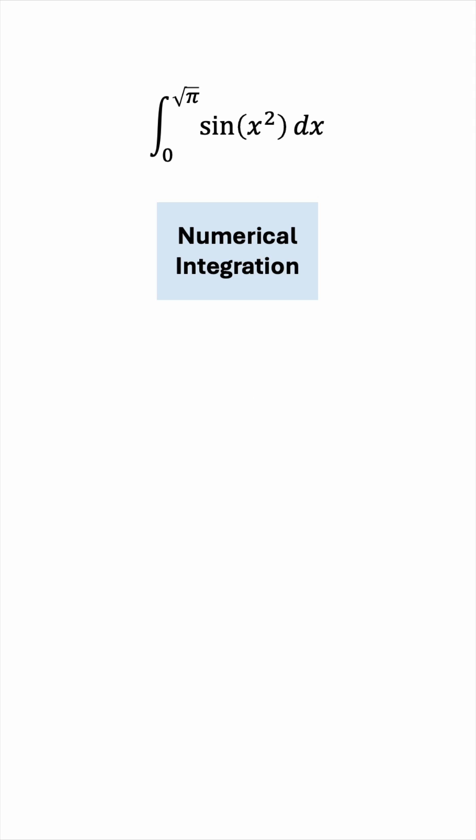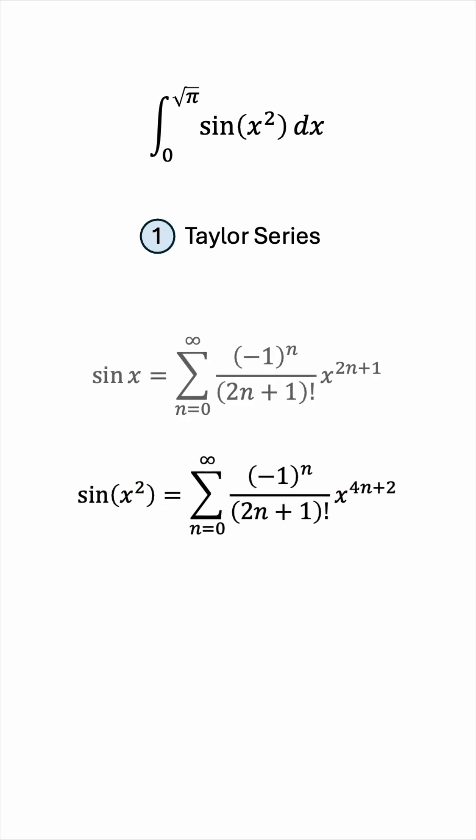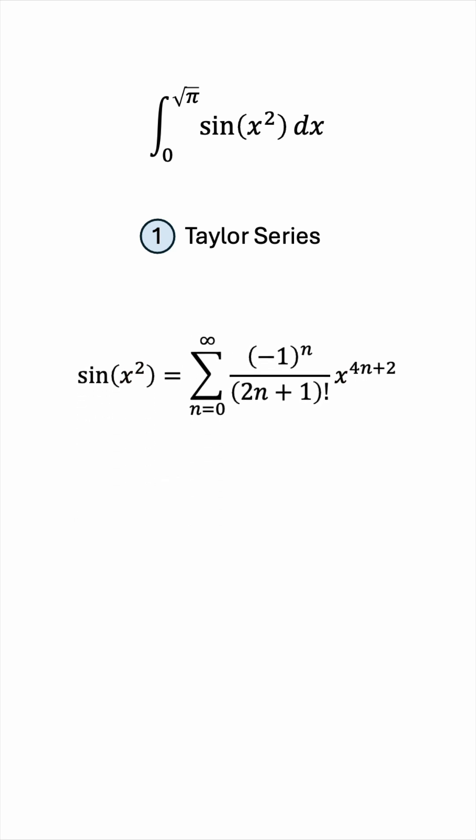We'll use two methods. Method one is the Taylor series expansion. We know that the series expansion for sin x is the following. We have sin x squared, so we'll just replace x by x squared. And then using laws of indices, we'll multiply the powers like that. So we have the series expansion for sin x squared.